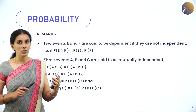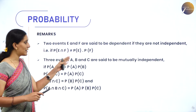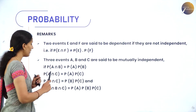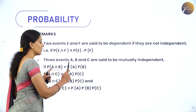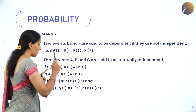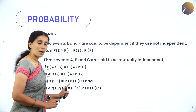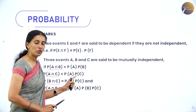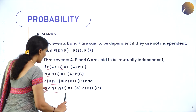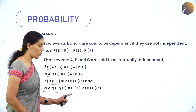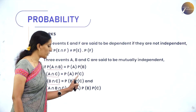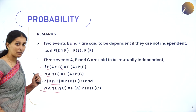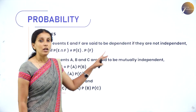When extended to three events A, B, C, they are independent only when all four conditions hold: P(A∩B) = P(A)·P(B), P(A∩C) = P(A)·P(C), P(B∩C) = P(B)·P(C), and P(A∩B∩C) = P(A)·P(B)·P(C). All four cases must be satisfied for three events to be independent.